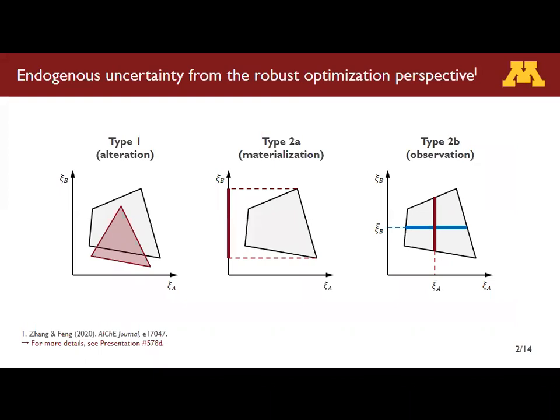Endogenous uncertainty has its origin in stochastic programming, but there is also a large overall effort to address it from a robust optimization perspective. Since robust optimization is a set-based approach, considering endogenous uncertainty can be translated as how the uncertainty set changes with the decision. Briefly speaking, there are three types of endogenous uncertainty in the literature.